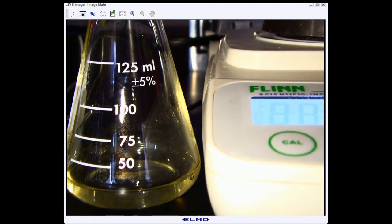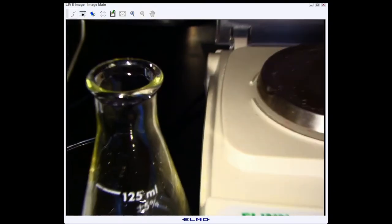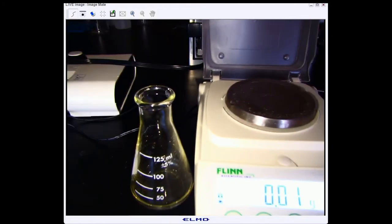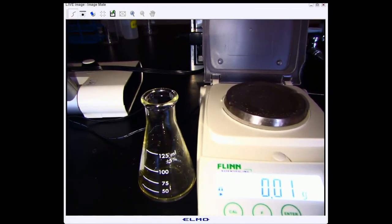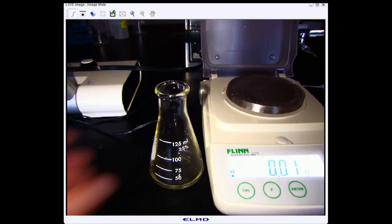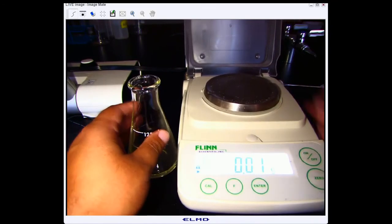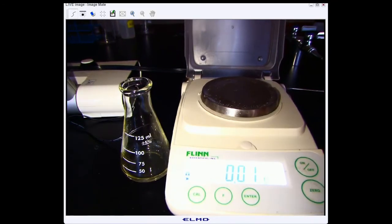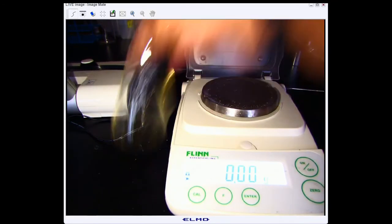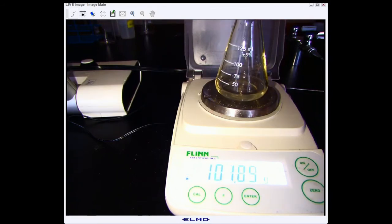Our next step is to record the mass of the vinegar and the flask. You'll notice that our scale is not displaying zeros right now. So I'm going to press the zero button and now we can record that. Take a moment to record that data.